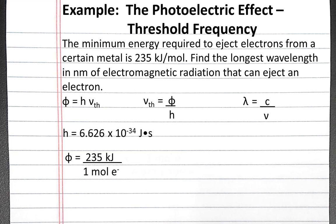So first, we can convert from moles of electrons to electrons using Avogadro's number. One mole of electrons is equal to 6.022 times 10 to the 23rd electrons. And then we can convert from kilojoules to joules using the conversion factor 1000 joules is equal to 1 kilojoule.